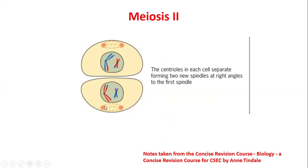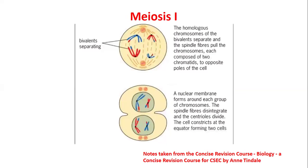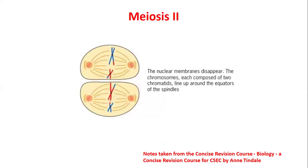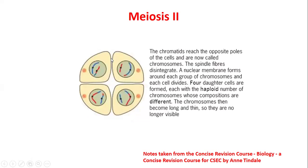In meiosis II, the two new cells created in meiosis I each replicate again. Each cell separates, forming a new spindle at a right angle to the first spindle. The nuclear membrane disappears and the chromosomes — each composed of two chromatids — line up around the equator. The centromere splits, the chromatids are pulled apart to the opposite poles, and a constriction forms in both cells.